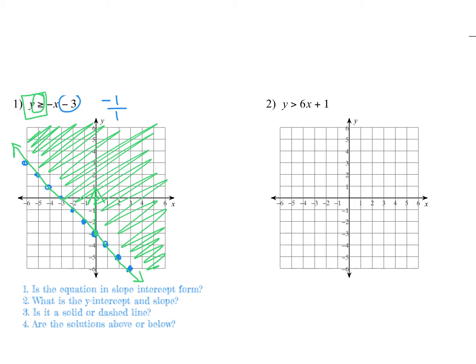Double-check by testing the point (0, 0). If x = 0, the opposite of zero is zero, minus three is negative three. Is zero greater than or equal to negative three? Yes, it is — the point checks out.